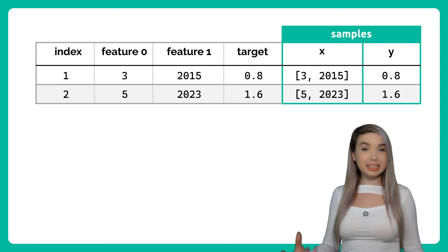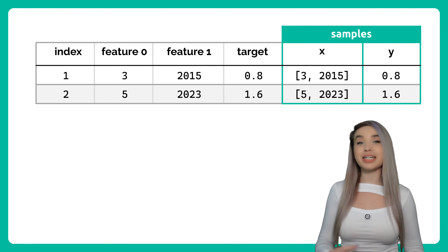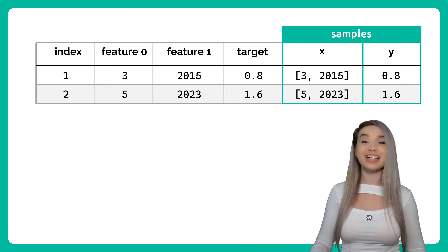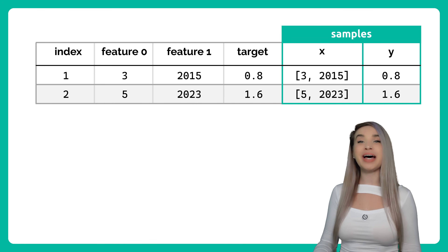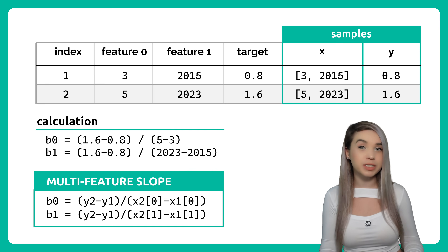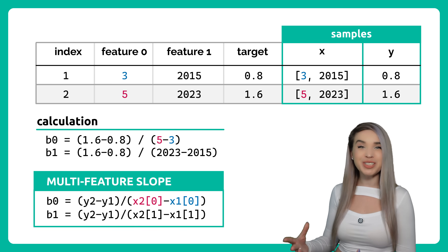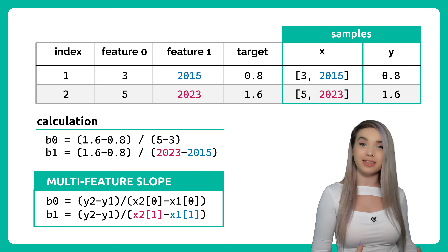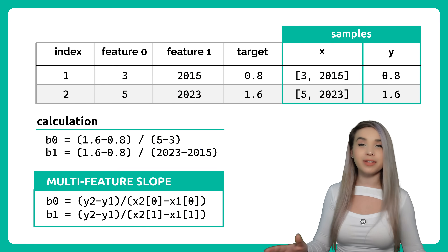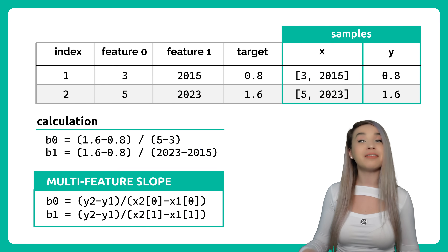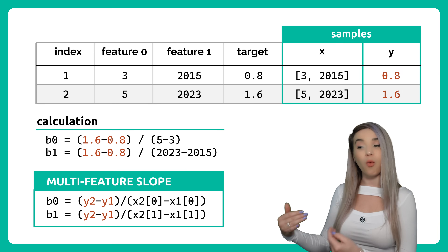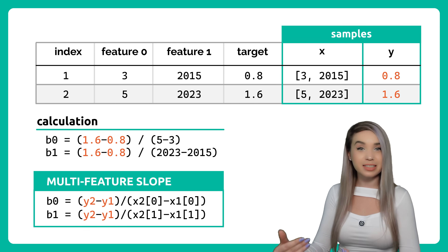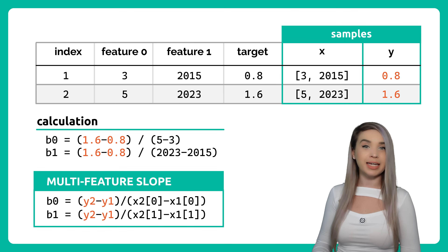Now since this time we are dealing with two features, we will also have two slopes — one slope for the rooms and one slope for the years.